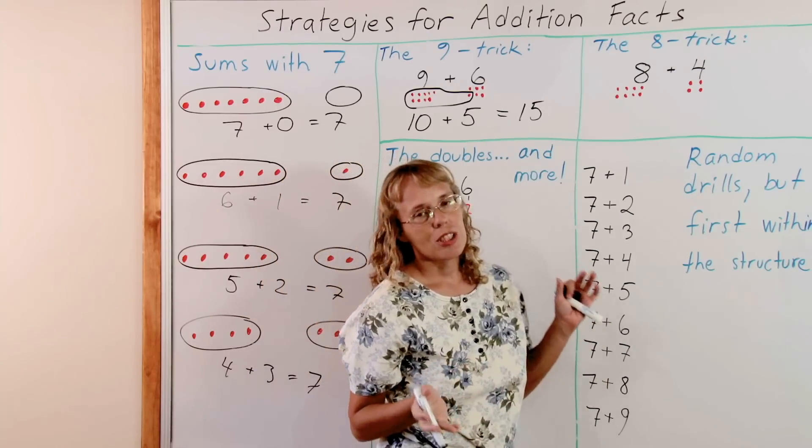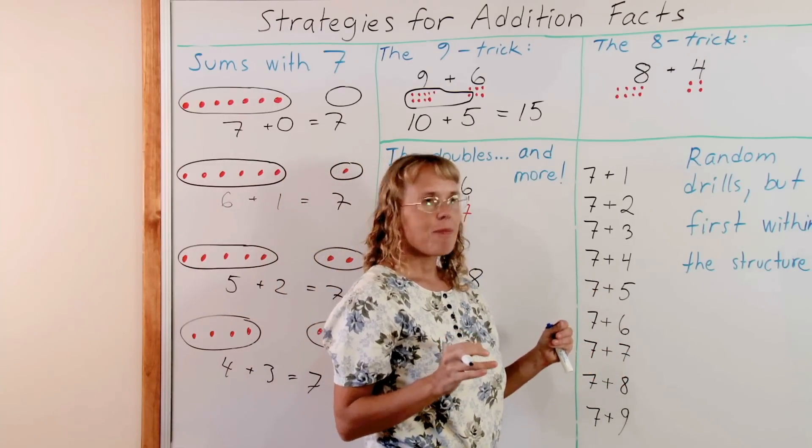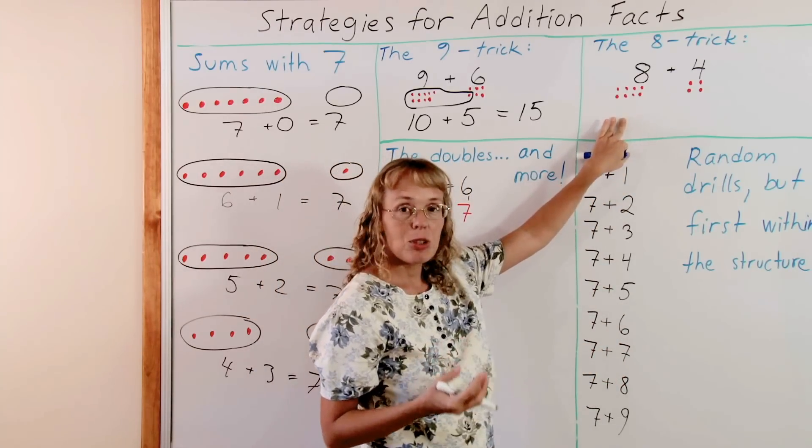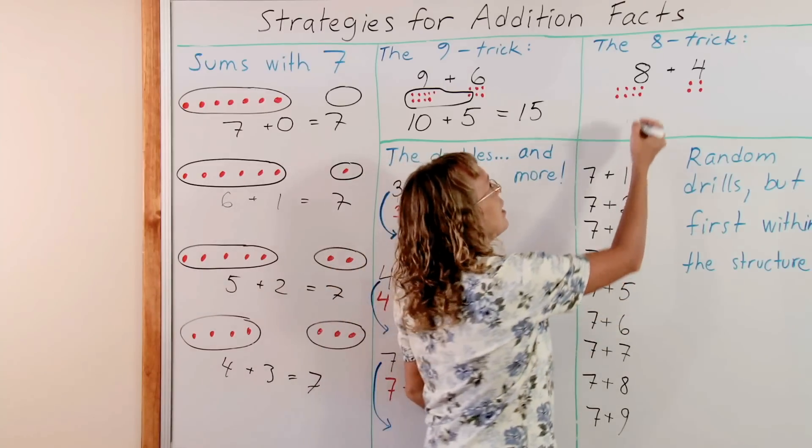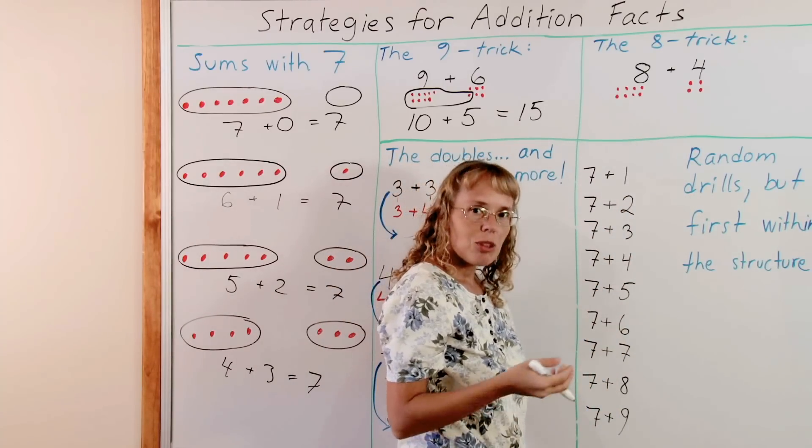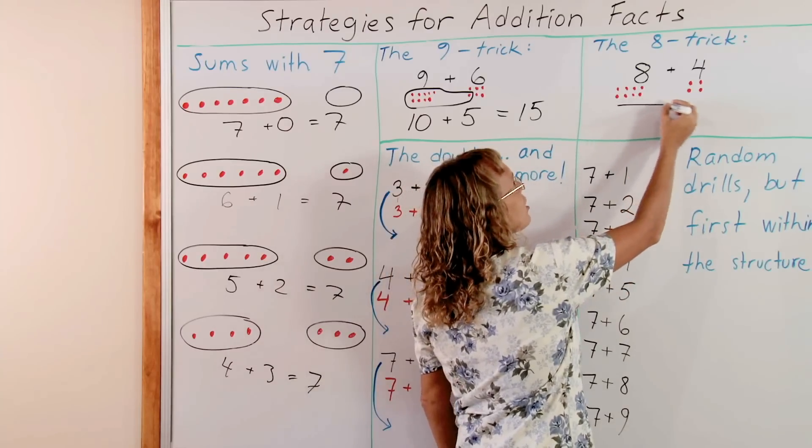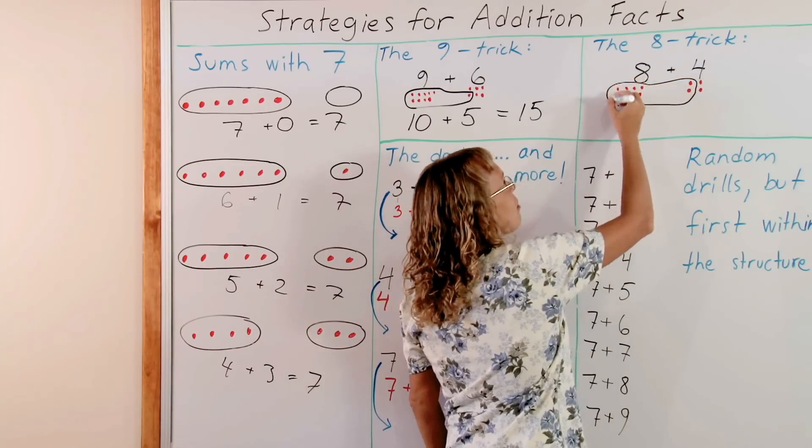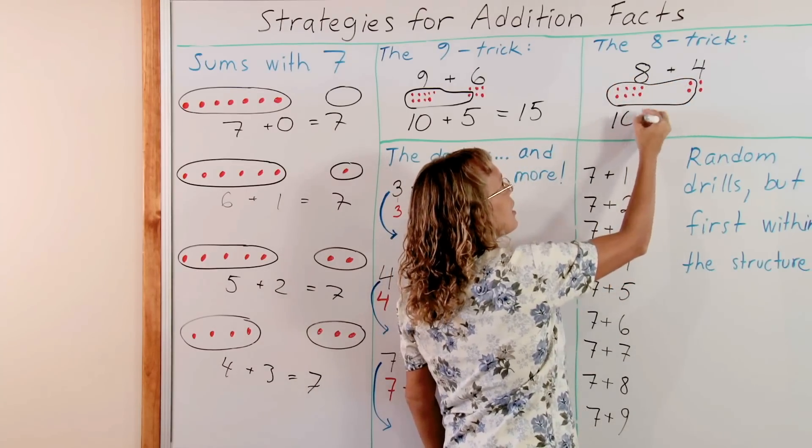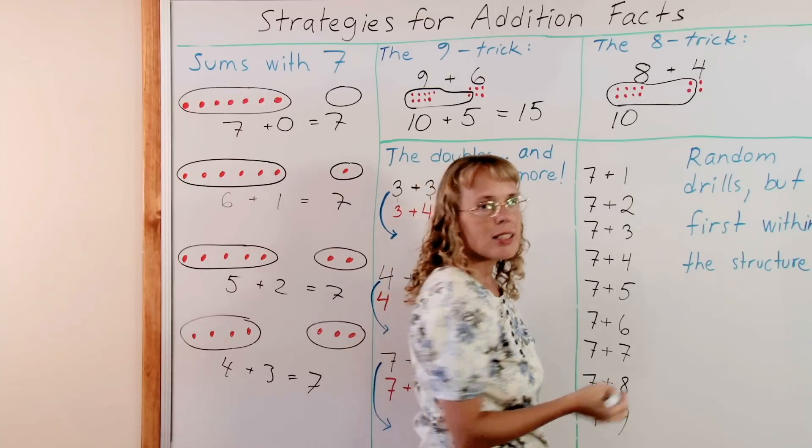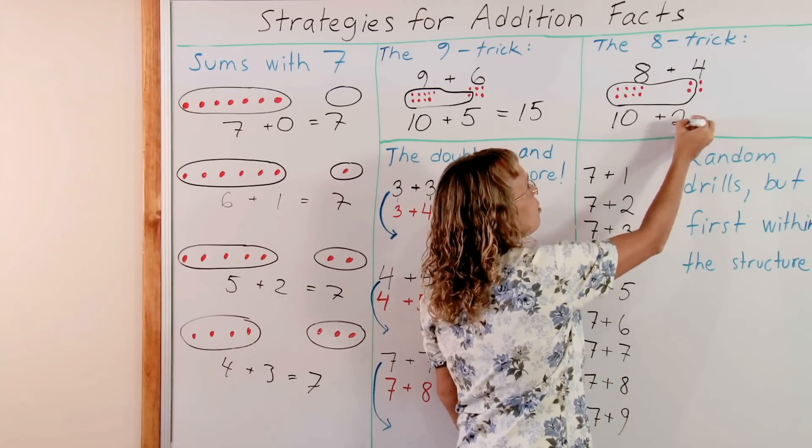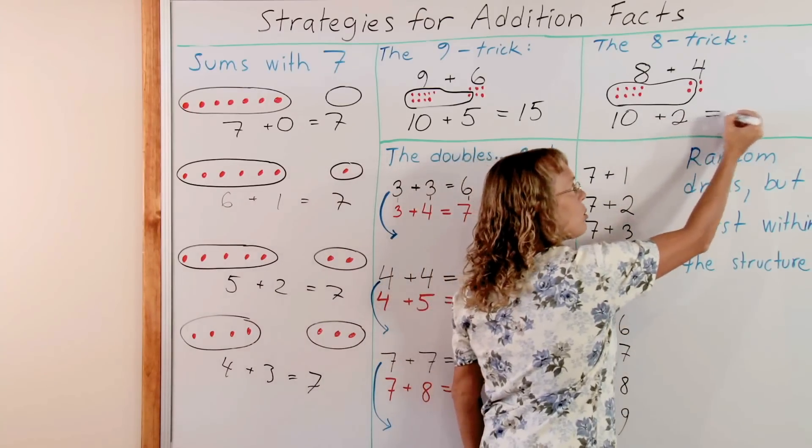But we can also use a similar trick with 8. Just imagine that 8 wants to be 10. And so it's not satisfied being 8. It wants to be 10. It steals or takes 2 from the other number. And so it becomes 10. And 4 in this case just becomes 2. 2 left. And then we add 10 plus 2 which is 12.